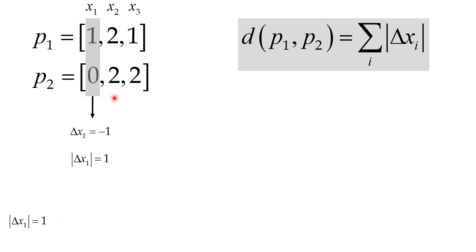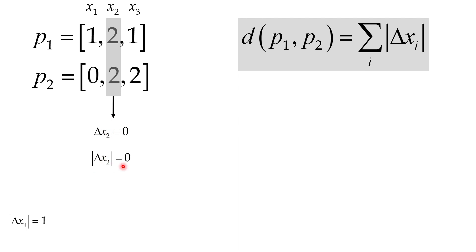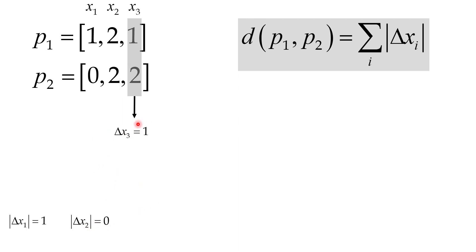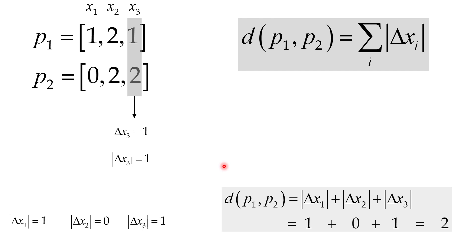The delta x2 is 0, so the absolute value is 0 as well. And the delta x3 is 2 minus 1, which is 1, and the absolute value is 1. In order to calculate the Manhattan distance between these two points, we sum these absolute values: 1 plus 0 plus 1, which equals 2.